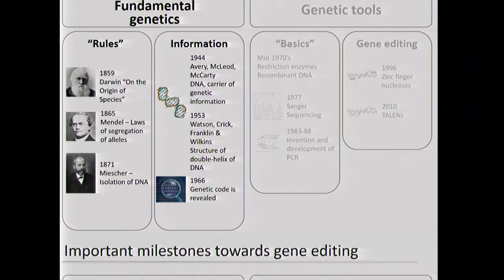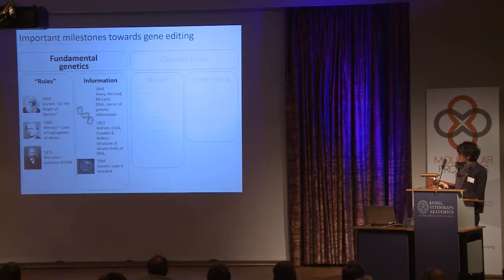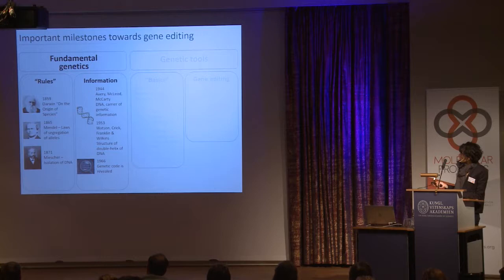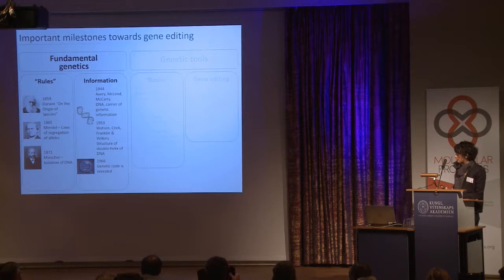I would like to give you an idea of where CRISPR-Cas9 can be placed in the history of genetics towards gene editing, mentioning only selected breakthroughs. The 19th century was very critical for fundamental genetics, with Darwin on the origin of species, Mendel on the segregation of alleles, and Friedrich Miescher who isolated DNA in 1871. The mid-last century was critical to show that DNA was a carrier of genetic information, to determine the structure of DNA, and to reveal the genetic code.